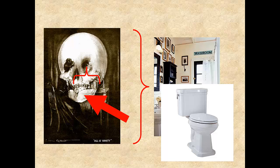There seems to be an inner logic to this transition in meaning. Often this logic can be described in terms of categorization, and often this categorization can be seen in hierarchical structure. In this example, we've gone from a very specific object to greater generality and then back to a specific object. We can talk about categorization in terms of the relations between words, and these relations are often described in terms of hierarchical structure.